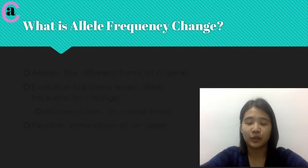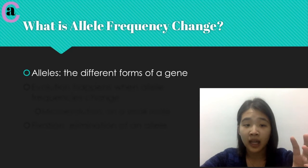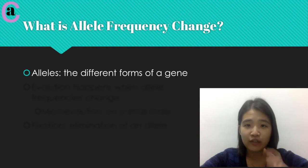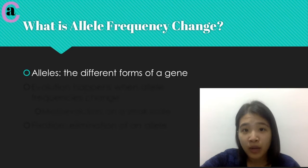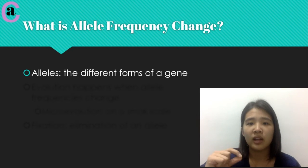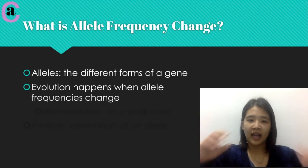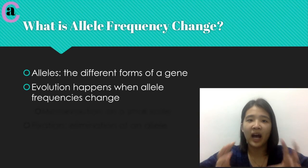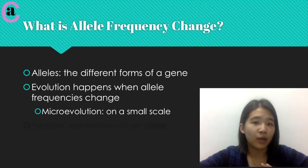So what exactly is allele frequency change? To start at the very beginning, alleles are just different forms of a gene. For example, in human hair, we have black hair, brown hair, blonde hair, red hair, and whatever else. Each of these different colors is coded by a different allele. And any time that you have allele frequencies change within a population, you have evolution, specifically microevolution.